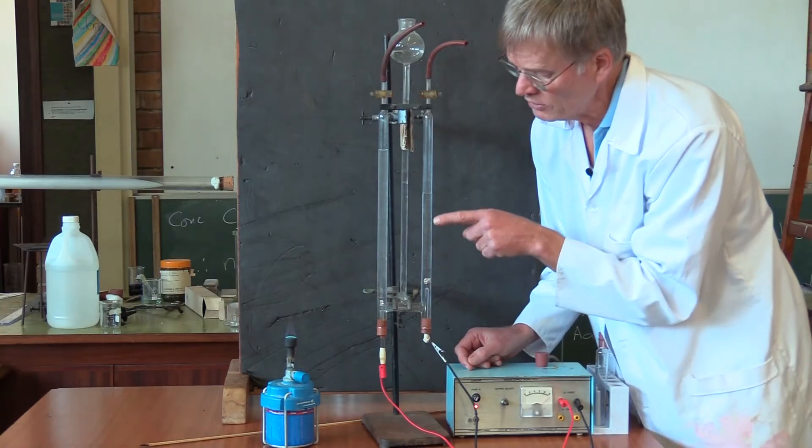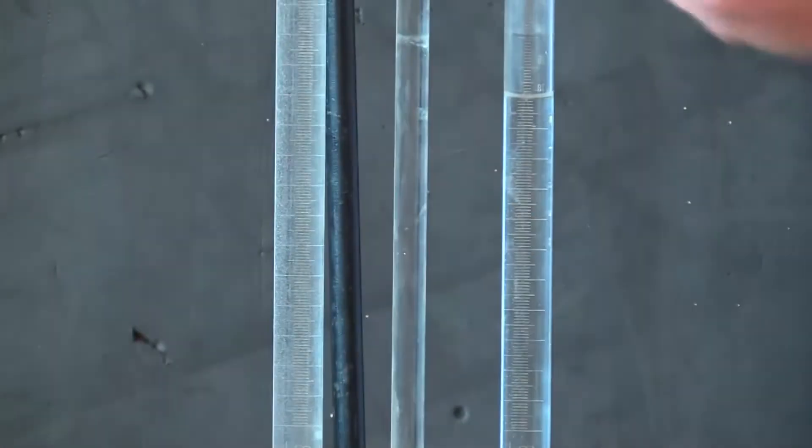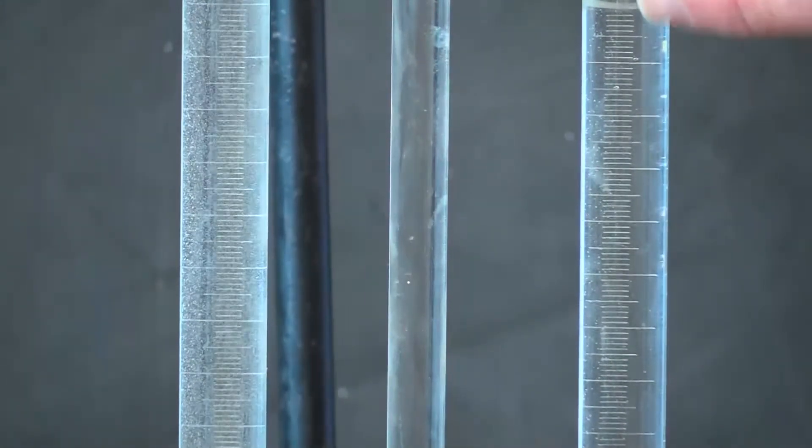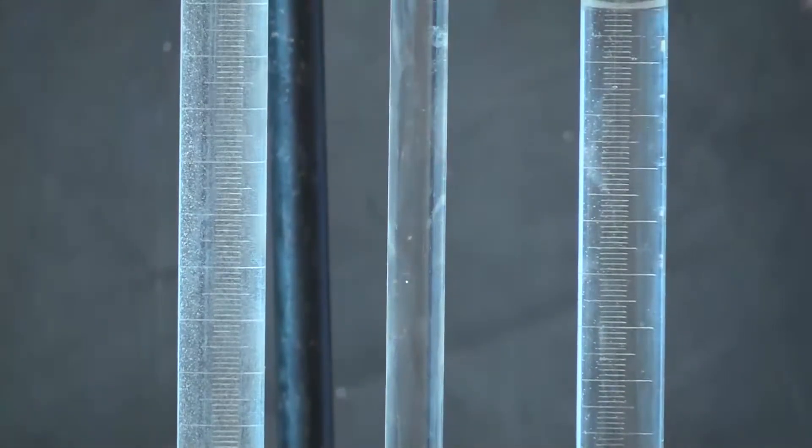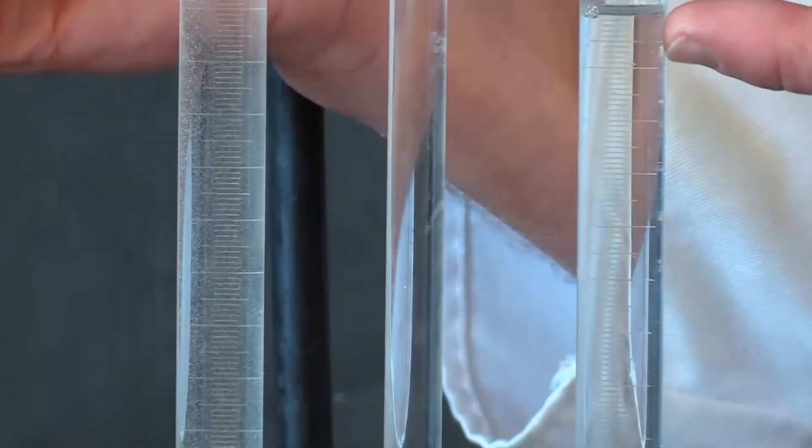And you can see bubbles bubbling up in these two tubes. Now the tubes are there specifically to collect the gases separately. So let's have a look where the gas levels are at the moment.